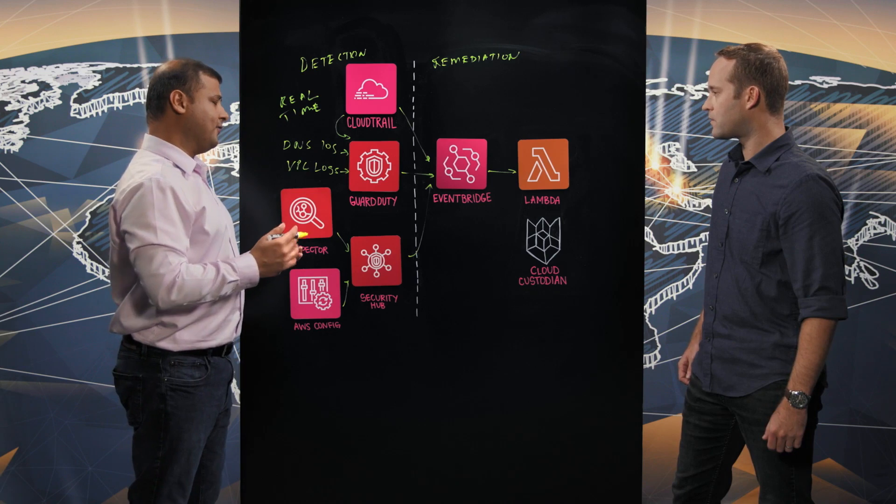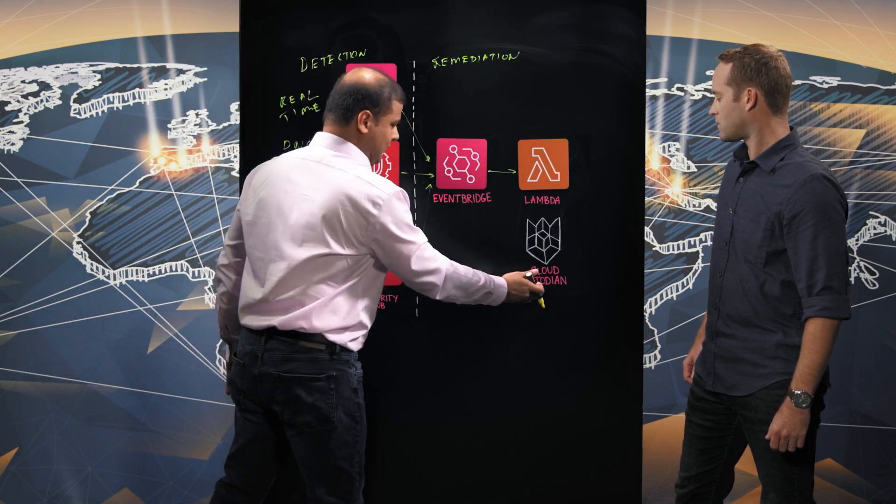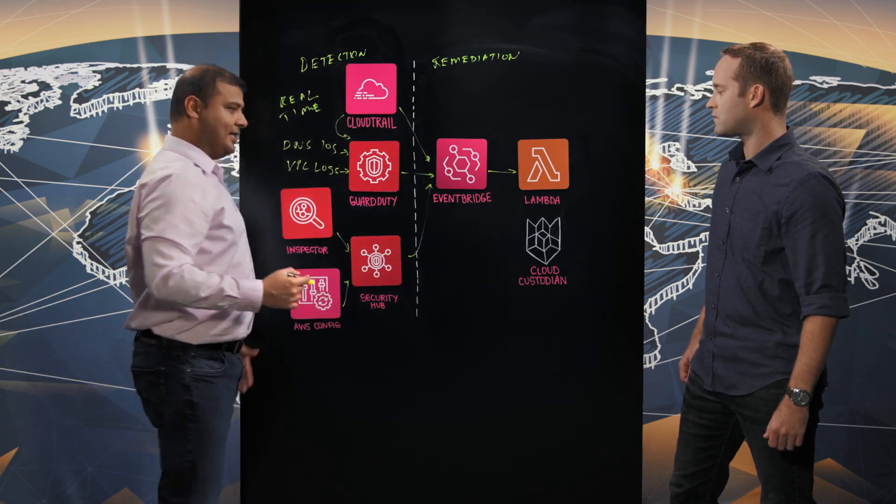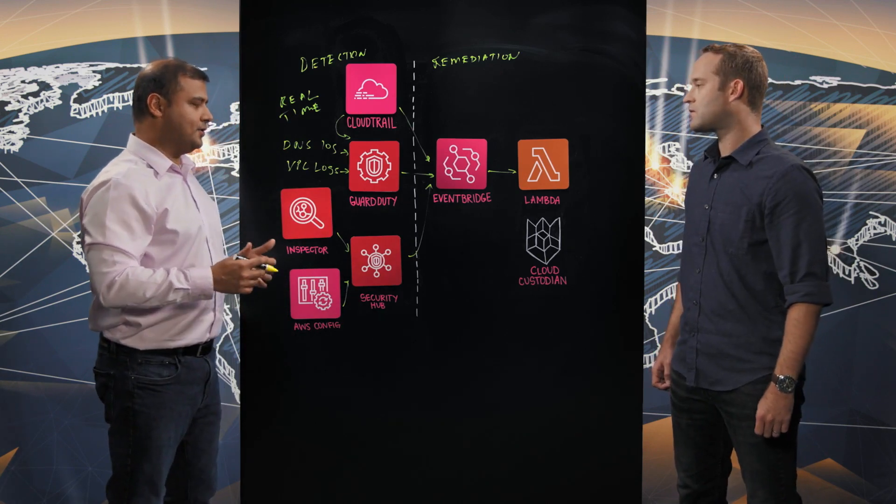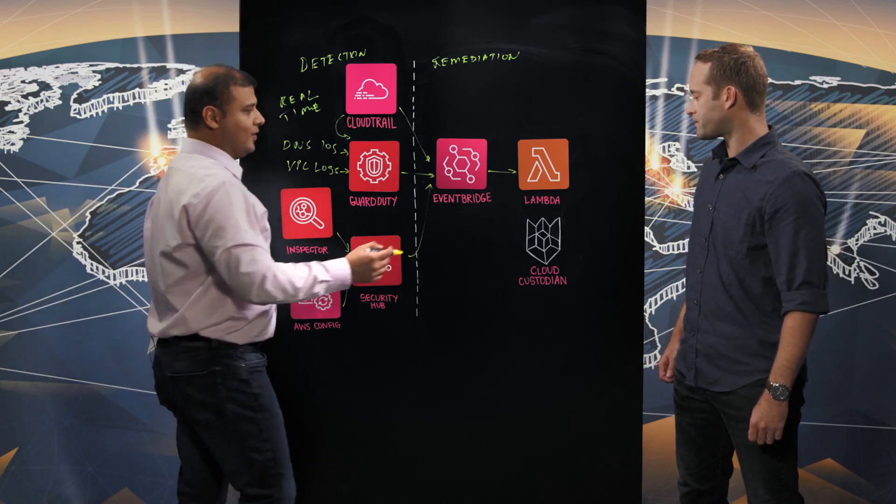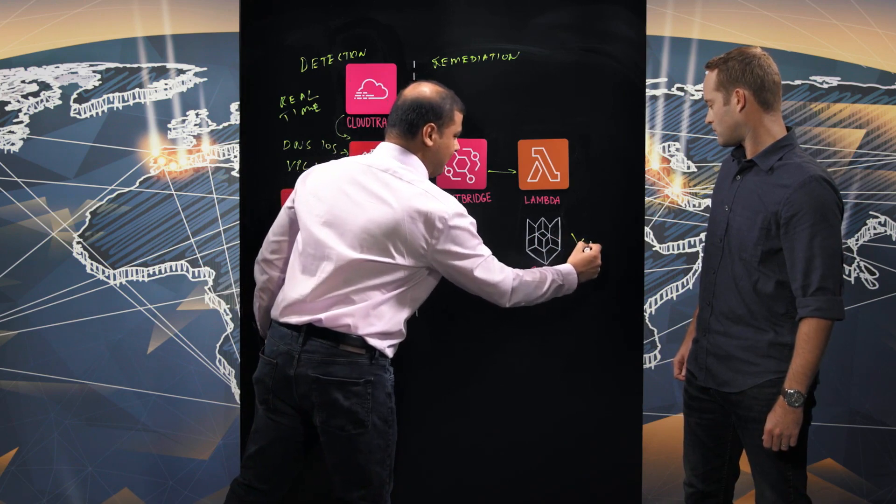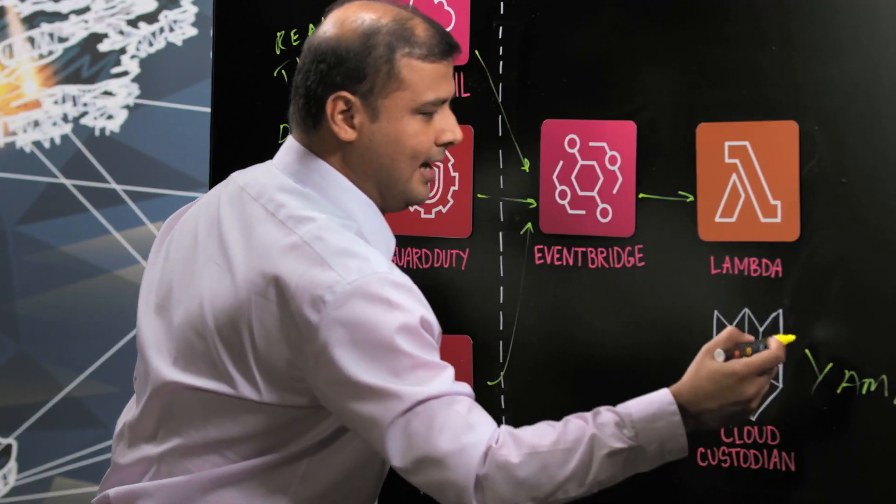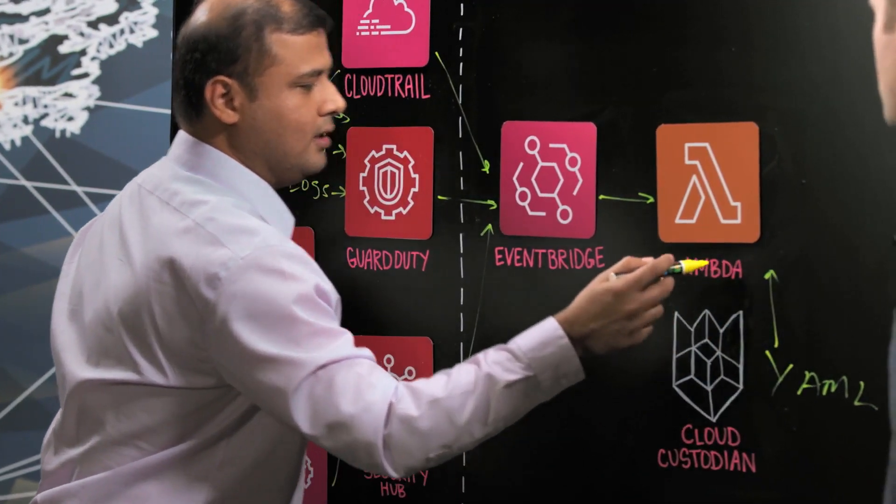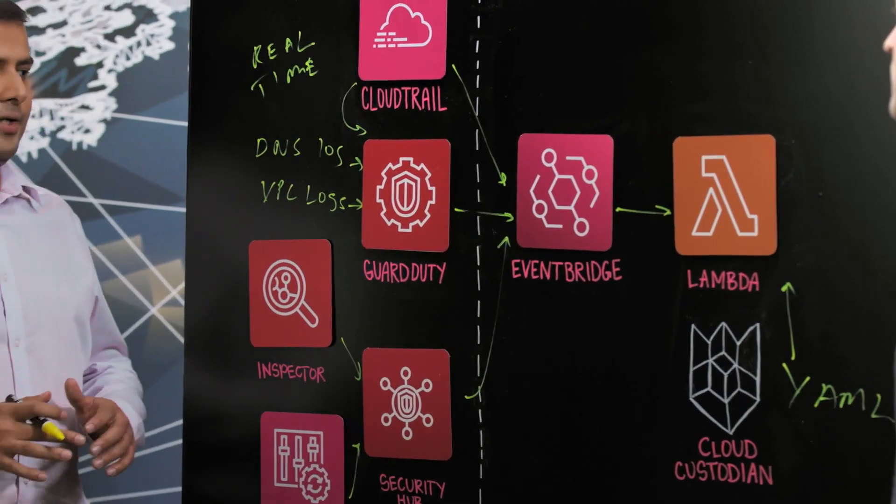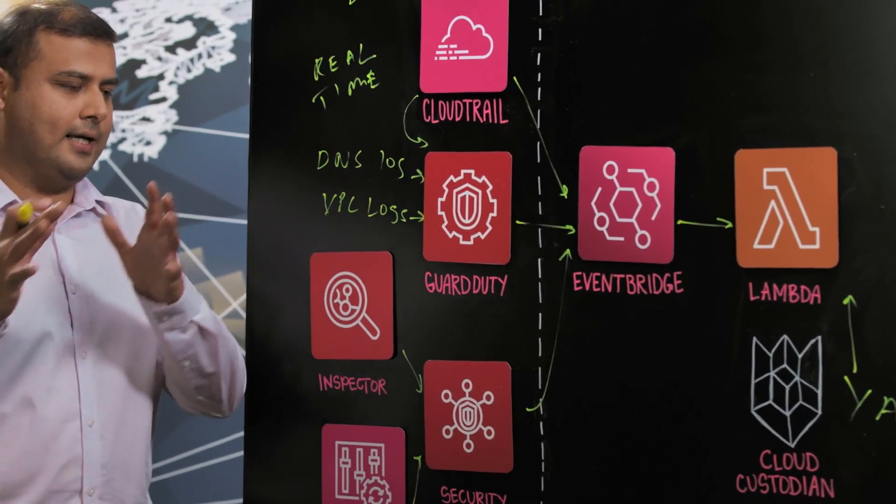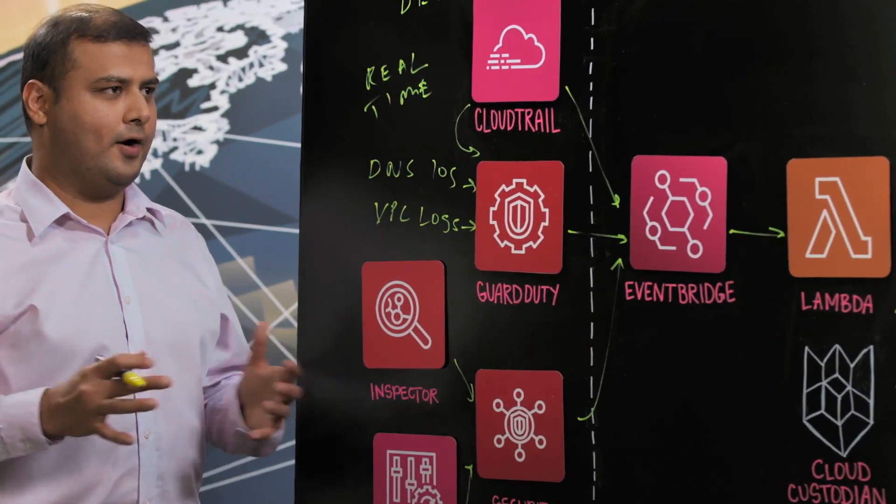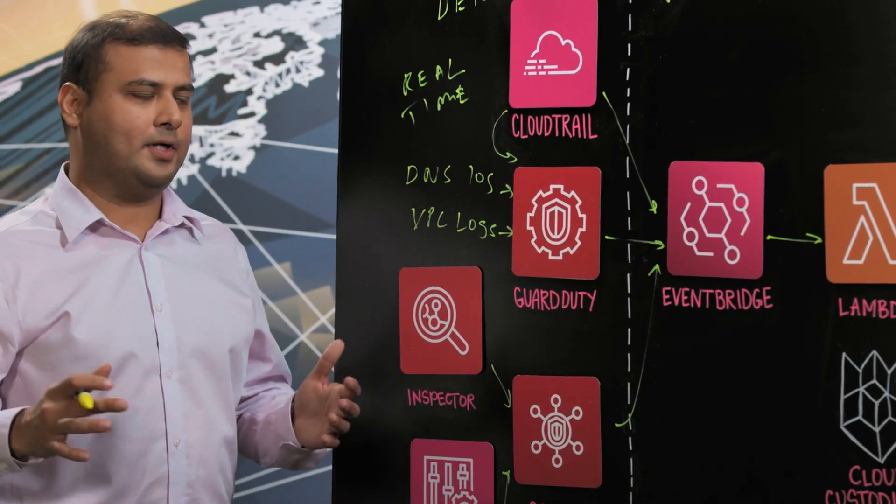And the way we build these Lambdas is we're using Cloud Custodian which is an open source engine which enables our security engineers to define the security rules in a YAML format and push the custom security Lambdas to all the different regions and all the different accounts in an automated fashion so that we have a multi-account governance.